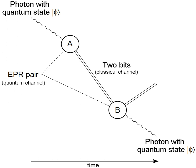Frequency hopping spread spectrum is a method of protecting information transfer that involves the user switching from one frequency to another frequency hundreds of times a second. For this method to work, one computer is set as the main computer and will regulate when the other computers will switch frequencies and how often. By switching frequencies hundreds of times a second, a user can be assured that any would-be attacker will have an extremely hard time both trying to read the data and trying to jam the frequency.